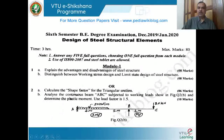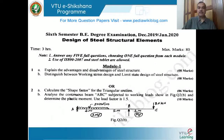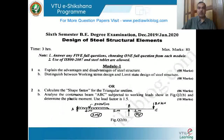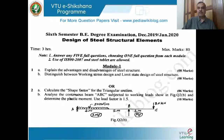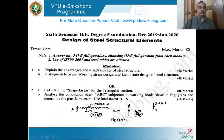As part of the limit state method, you need to discuss the different limit states considered in steel design. We have the limit state of collapse — where material strength comes into picture — covering limit states in tension, compression, bending, and shear. We also have serviceability limit states where deflection, local buckling, corrosion, and durability are covered. Many answers are available from both textbooks and IS 800.